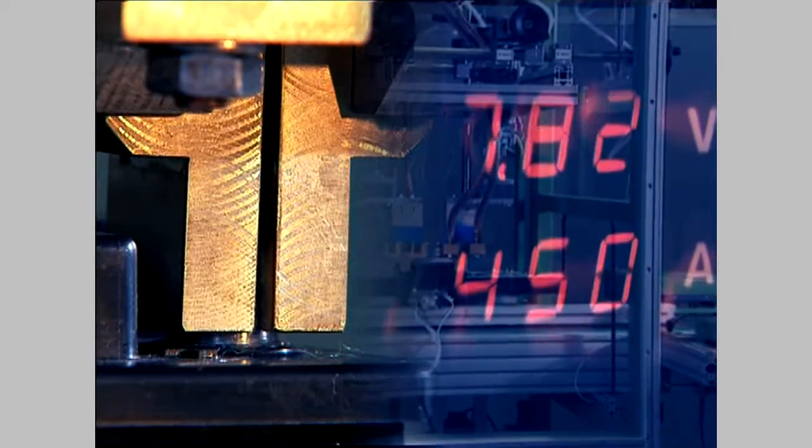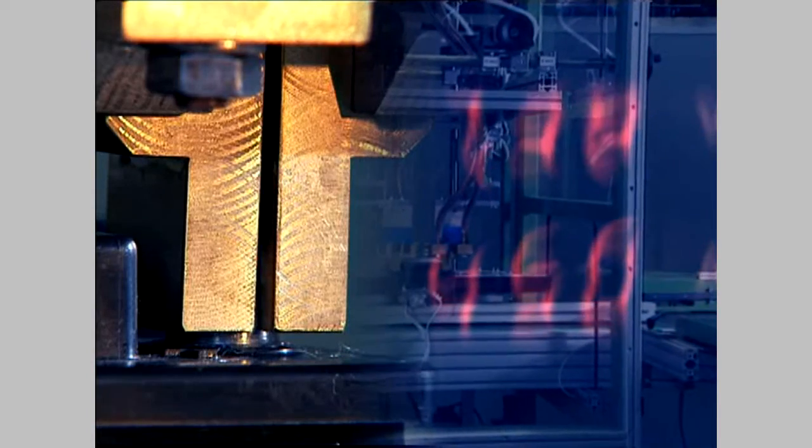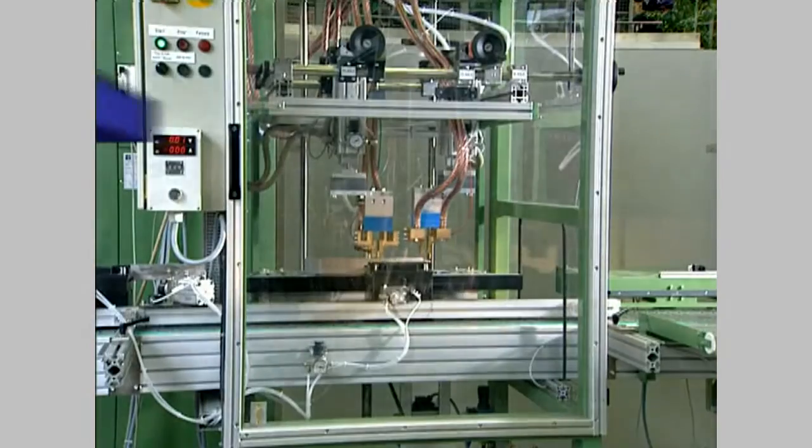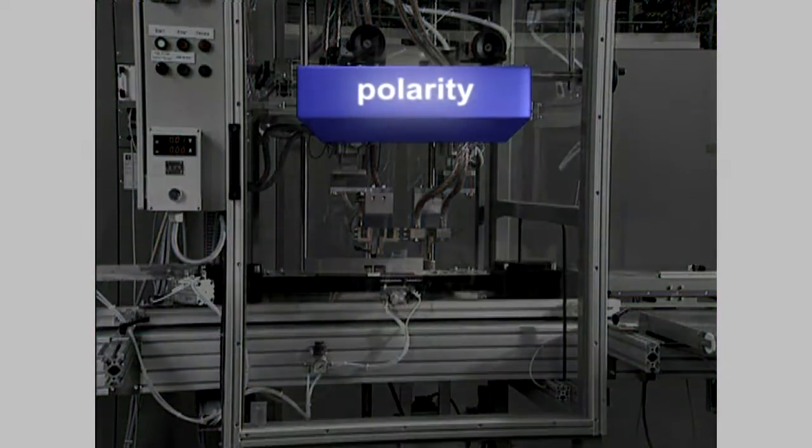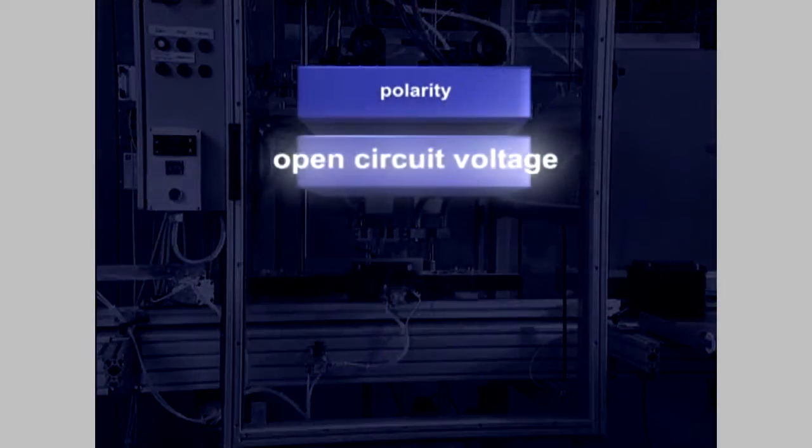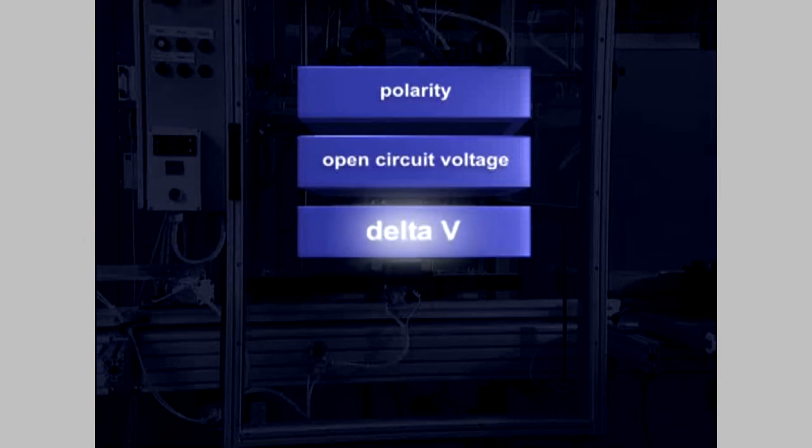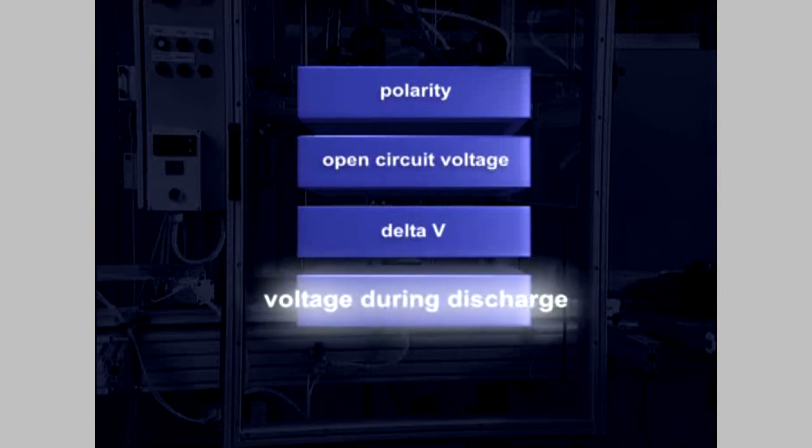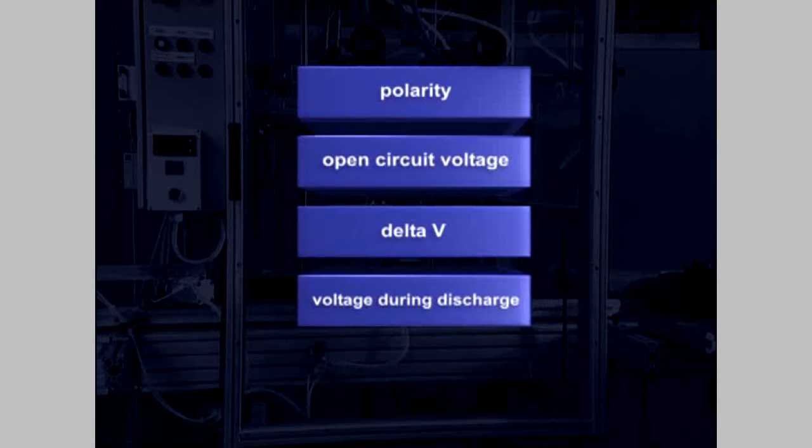To effectively avoid a variety of possible faults during battery production, each battery undergoes a test according to four criteria: polarity, open circuit voltage, delta-V evaluation, and the most significant criteria, voltage during discharge.